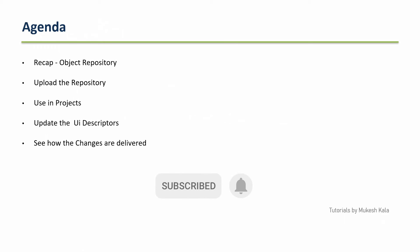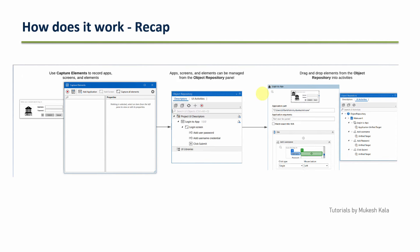In case you are coming to the channel for the first time and haven't already subscribed, please consider subscribing to get the latest updates from the series. So, a quick recap: we have something called object repository — we capture the elements, add all the app screen elements to the object repository, and then just drag and drop and use it in our projects.